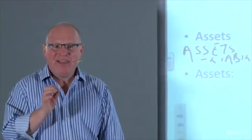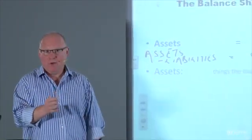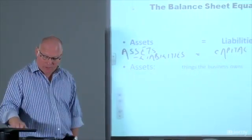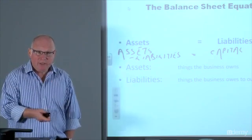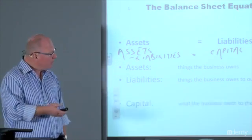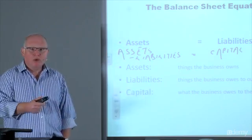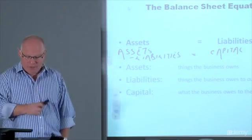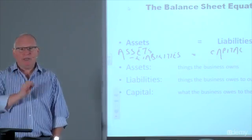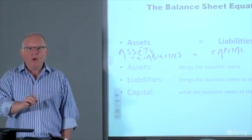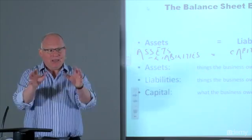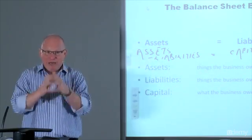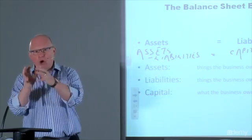So what do we mean by assets, liabilities, and capital? Assets are the things the business owns — what the business has bought. Liabilities is what the business owes to outside parties. And capital is what the business owes to the owners of the business. Irrespective of whether we are dealing with a sole trader, a partnership, or a corporate, from an accounting perspective we always distinguish the owners from the business. The capital account is what the business, as a trading entity and sometimes a legal entity, owes to the owners of the business.